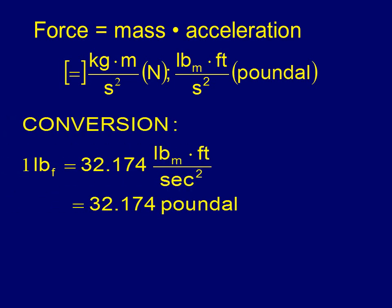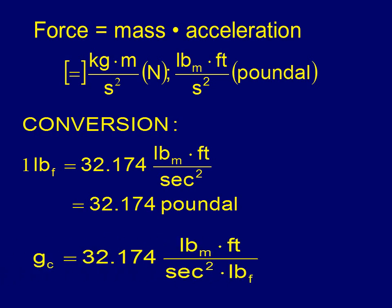If we want to convert units, we use a conversion factor. One of the most famous is what we call gc. gc is one pound-force. Originally people thought a pound-force weighs a pound-mass, but that's only true on Earth where gravitational acceleration is 32 feet per second squared. A pound-force is actually 32 poundals, so gc shows that one pound-force equals 32 pound-mass feet per second squared per pound-force. You'll often have to use conversion factors to go from one form of a unit to another.